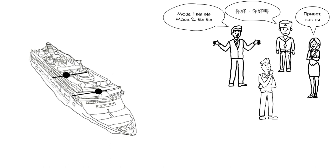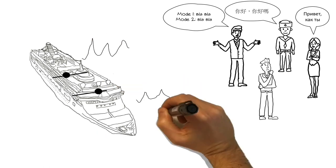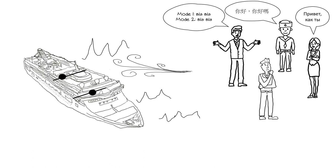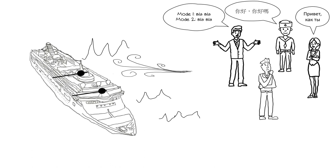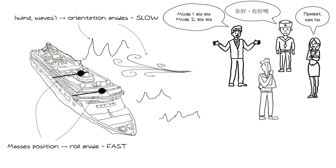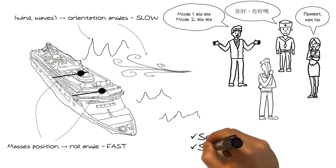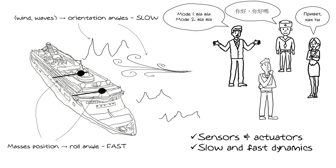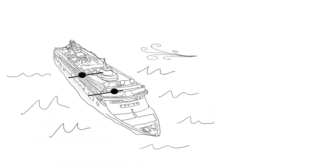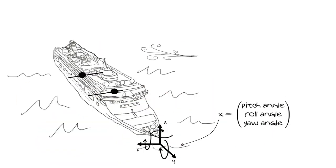We are informed that the boat orientation doesn't change very quickly upon a sudden change of waves or wind speed, but the roll angle changes very rapidly when we move the mobile masses. So the effect of waves and wind on boat oscillation is fairly slow, whereas a change of mass position affects the roll angle very quickly. Next, let's identify the four horsemen. The boat orientation is given by the pitch, roll and yaw angles — this is our state x.